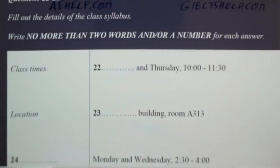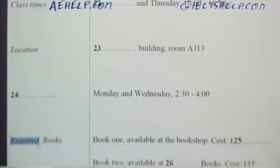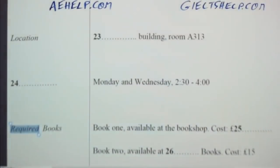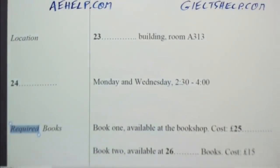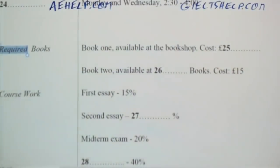Let me grab you a syllabus. As you see, the class meets each Monday and Thursday from 10 to 11:30 in room A313 of the Juliet Building. Do you know where that is? Yes, the Juliet Building is right next to the Student Union Building. OK, so next are my office hours — I hold them each Monday and Wednesday from 2:30 to 4 in the afternoon. If these don't work for you, send me an email and we can arrange another time. Now let's discuss the books you'll need. There are two books — you need not purchase either of them as there are copies available in the library.